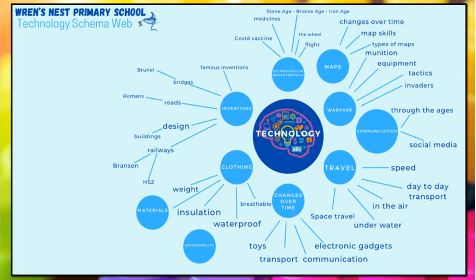Our last schema is technology. We look at famous inventions, the way things are made, travel, and how things are built. We've looked at lots of things that the Romans gave us that we can still use today.